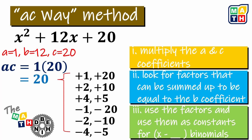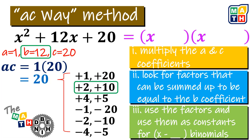We actually have six different pairs of factors that could be multiplied to get 20. The next thing for step two is to look for the pair which, when summed, equals the B coefficient. Our B coefficient is positive 12. The pair that results in positive 12 is positive 2 and positive 10. These are the values we place into the pair of binomial expressions — each starting with x — to get the two binomials.